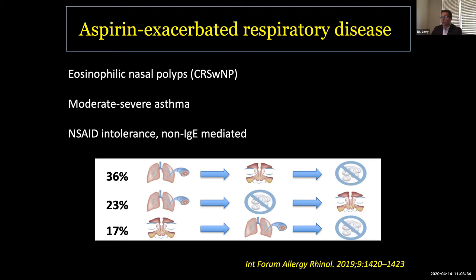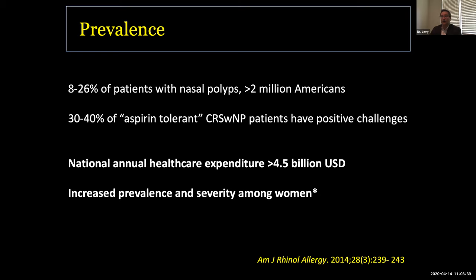AERD is thought to be involved in 8% to 26% of patients with nasal polyps — that equals greater than 2 million Americans. The most important take-home point is that we are missing these patients. For the reasons described, 30% to 40% of patients who deny issues taking aspirin and self-report as aspirin-tolerant actually show symptoms of aspirin sensitivity when challenged. So it is a tremendously undiagnosed, understudied, and undertreated disease process.